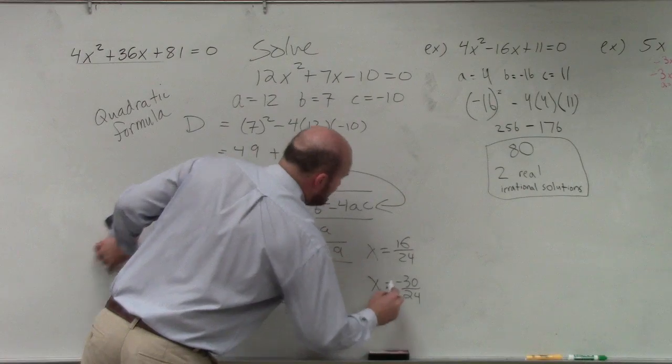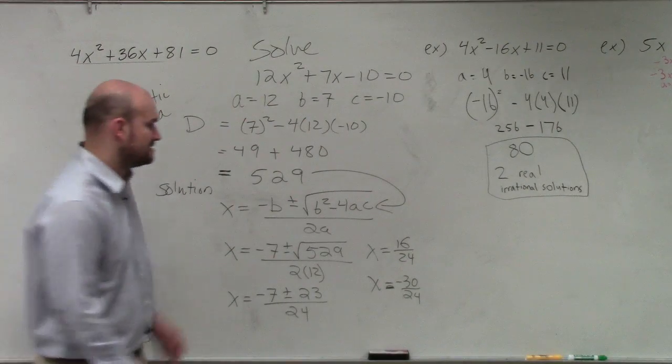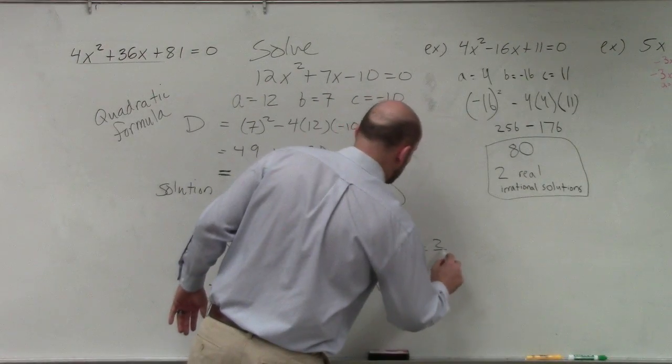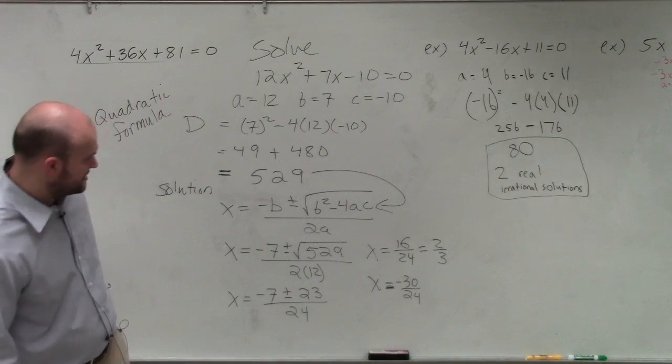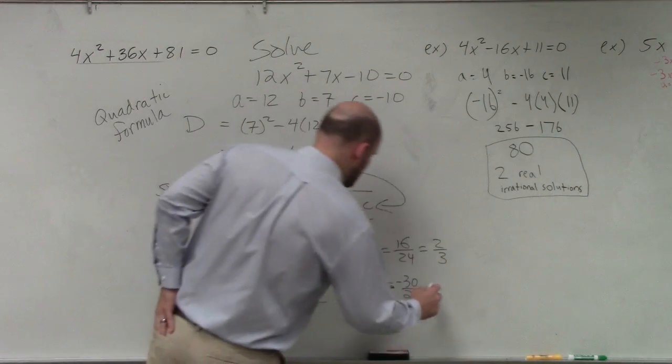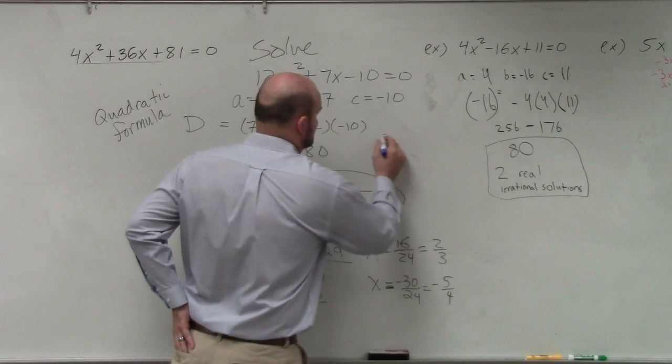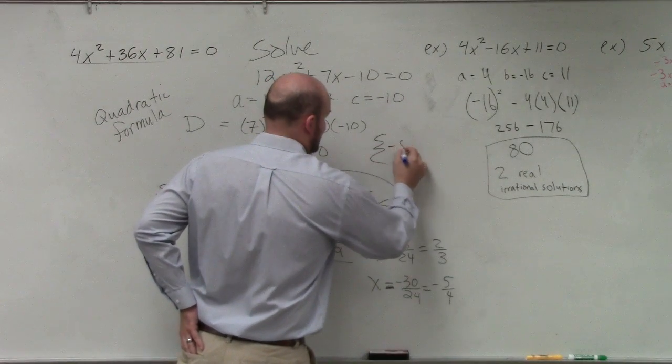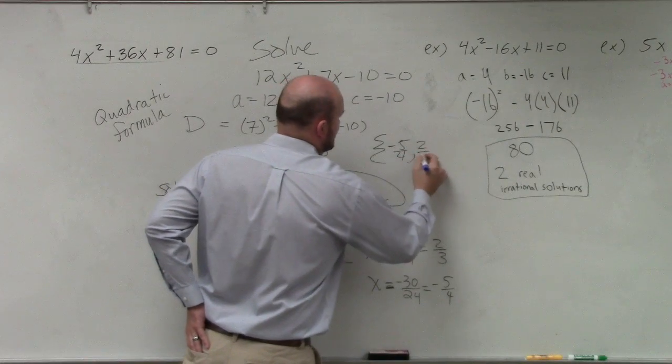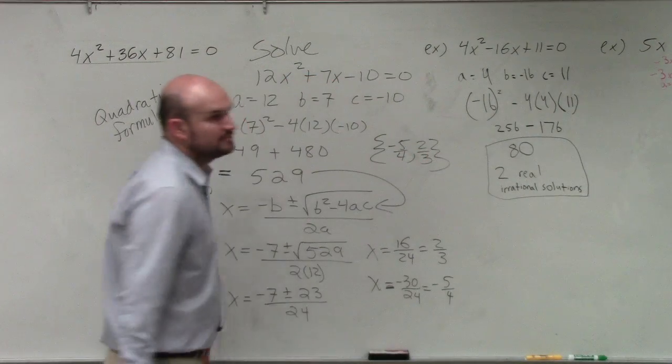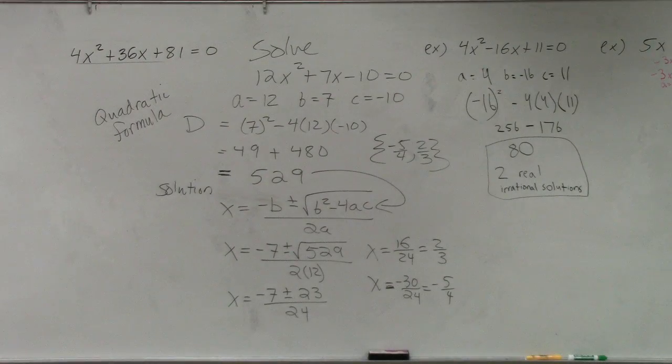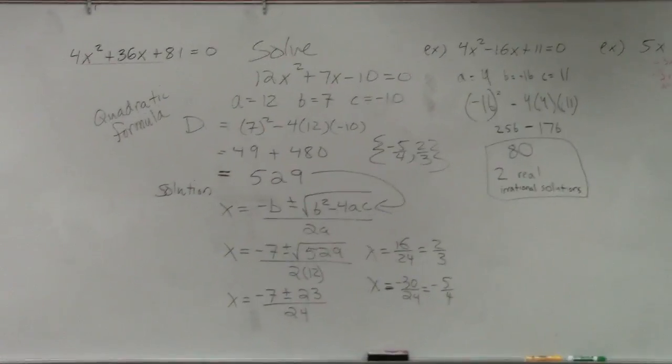Now, can I simplify both of those fractions? Yes. This comes down to 2 thirds. This goes down to 6, so that would be 5, 5 fourths, negative 5 fourths. And then so your solution set would be negative 5 fourths, 2 thirds. Two real rational. Are those both rational numbers? Yeah, of course they are.